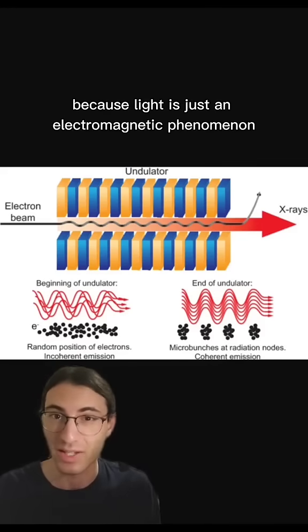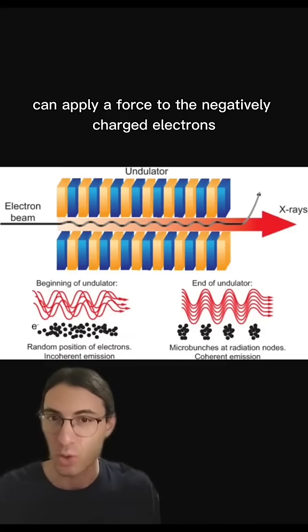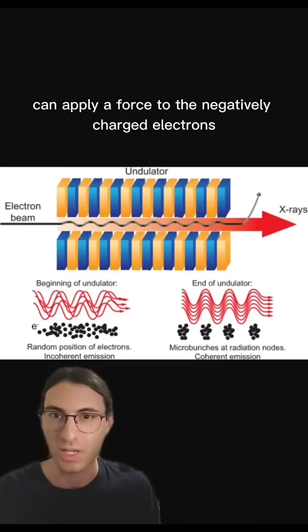However, because light is just an electromagnetic phenomenon, the light produced can apply a force to the negatively charged electrons. In particular, the electric piece of the electromagnetic wave forces the electrons to spatially clump up into micro-bunches.